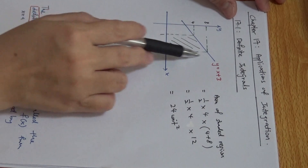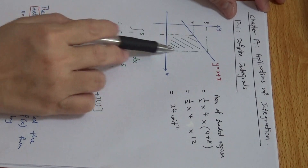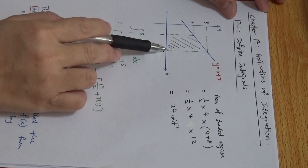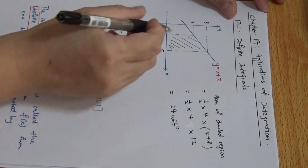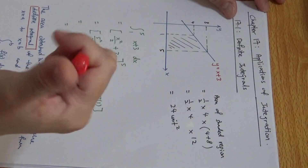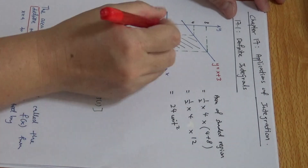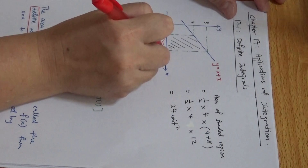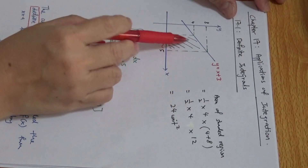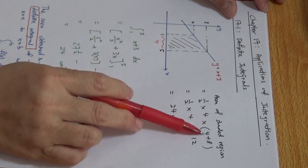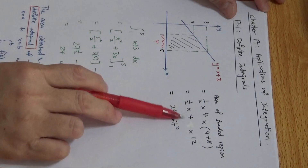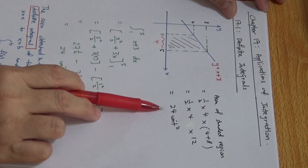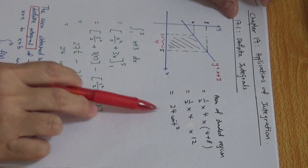Realize that this particular shape is a trapezium. So the area of the shaded region is half times height — this will be 4 — times the sum of the parallel sides, 4 plus 8. If I work this out, this will be 24 square units.